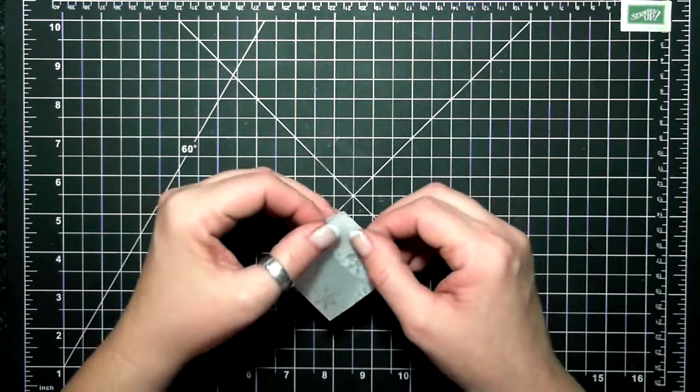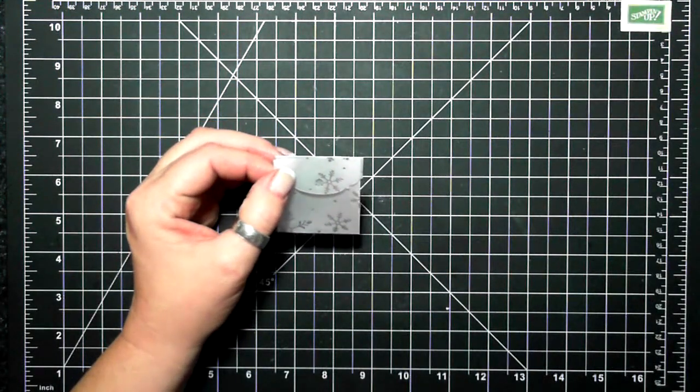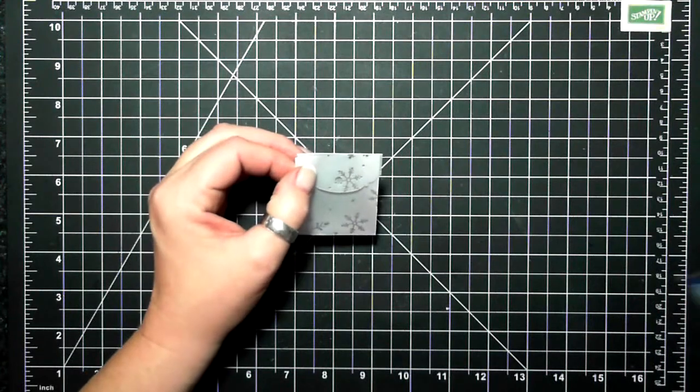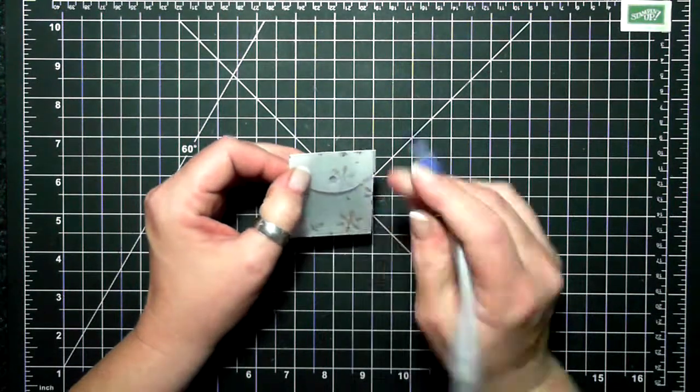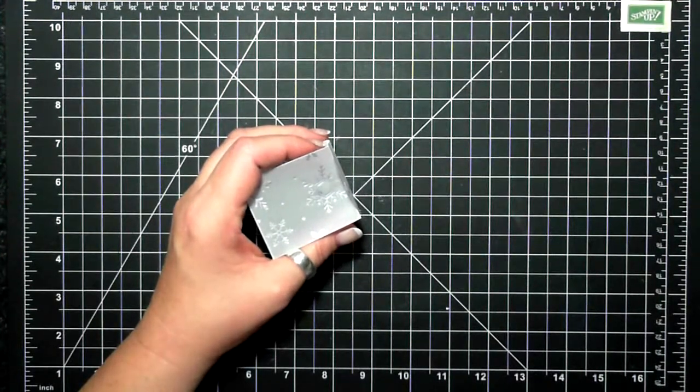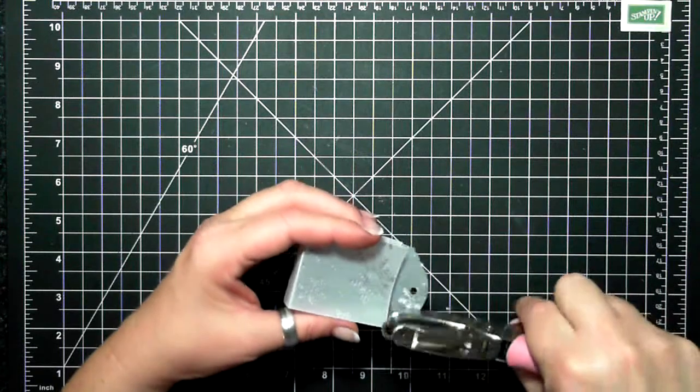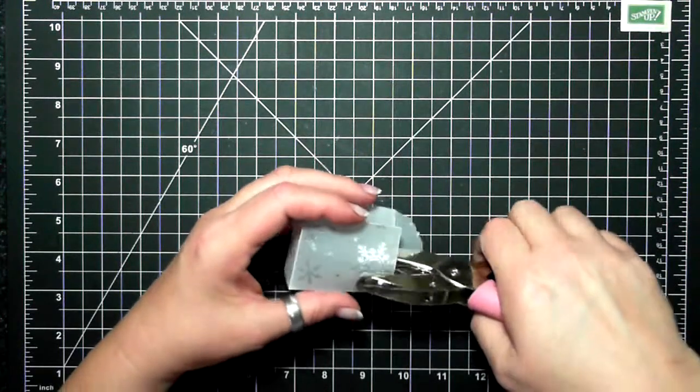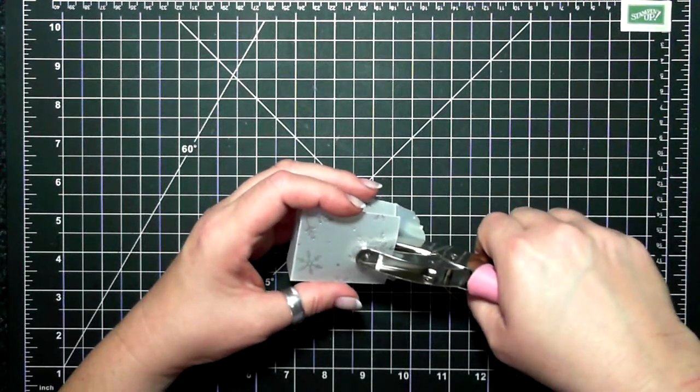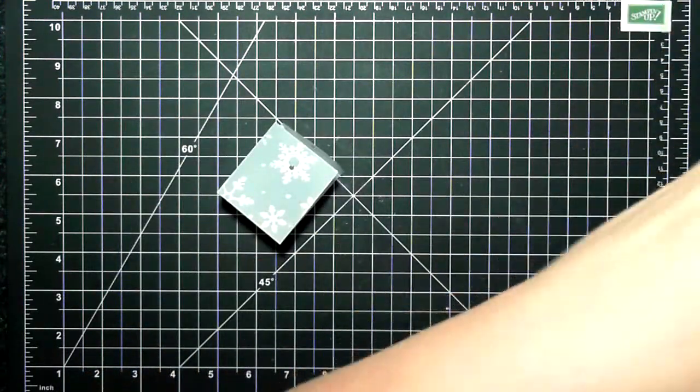All right, so how I'm going to close it is I have a pen here and I'm just going to make a mark. And then with my regular punch, I'm going to find that mark and punch it through.